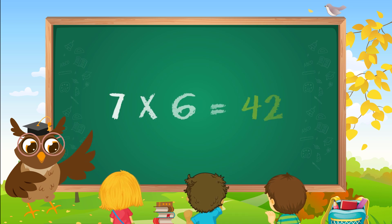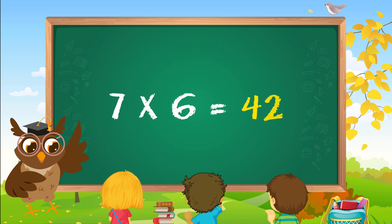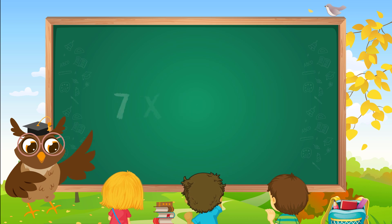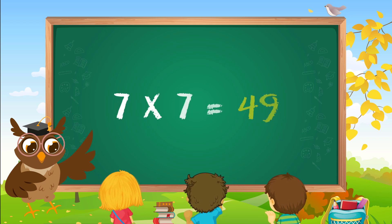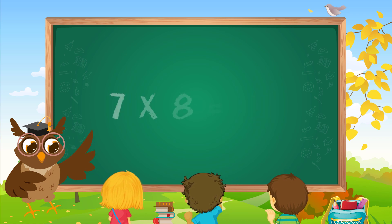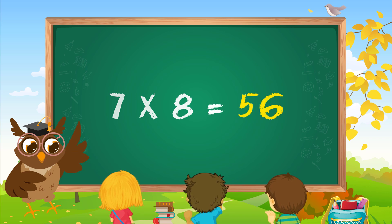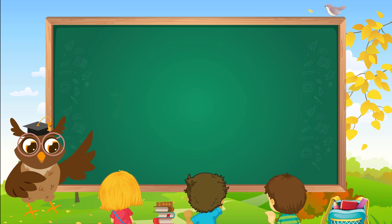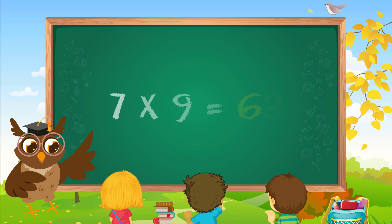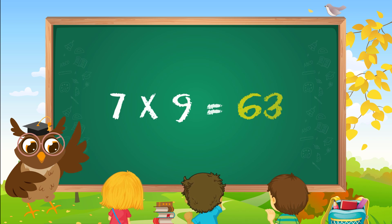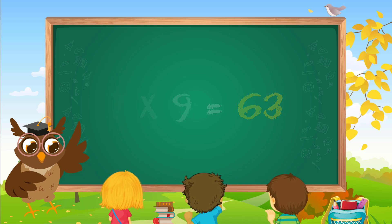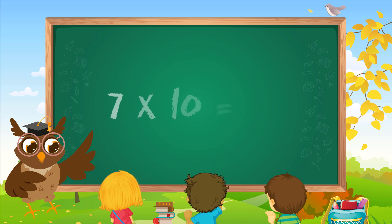Seven sixes are forty-two. Seven sevens are forty-nine. Seven eights are fifty-six. Seven nines are sixty-nine. Seven tens are seventy.